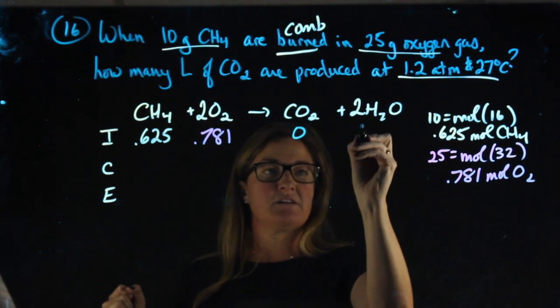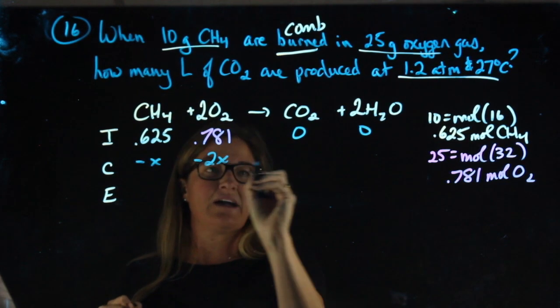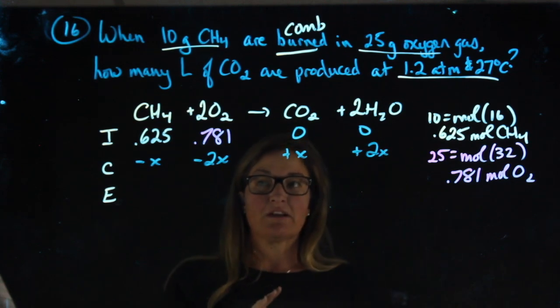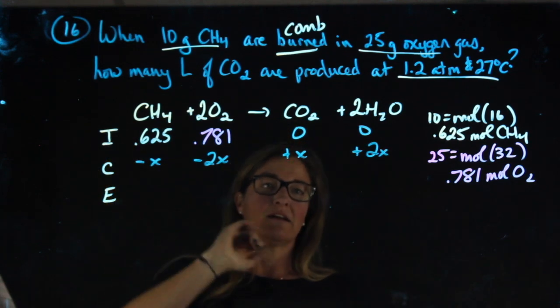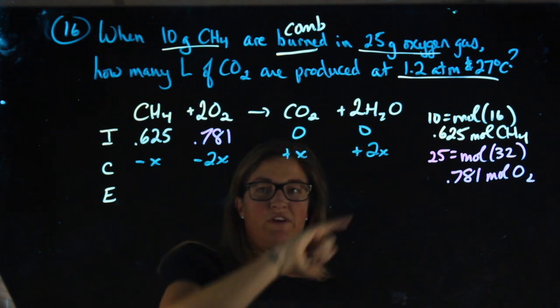These values both start at zero. Filling in my x's: minus x, minus 2x, plus x, plus 2x. The right side of the reaction will be increasing, the left side will be decreasing. Additionally, I decide how many x's based on what the coefficient is.